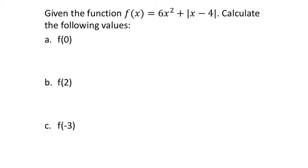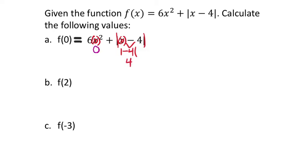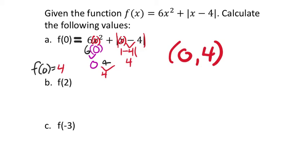Now a more complex function: f(x) = 6x² + |x − 4|. Find f(0). Replace x with 0: f(0) = 6(0)² + |0 − 4|. By order of operations, do the absolute value first: |0 − 4| = |−4| = 4. Then 0² = 0, and 6 times 0 = 0. So 0 + 4 = 4. Therefore f(0) = 4, giving us the ordered pair (0, 4).